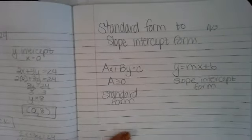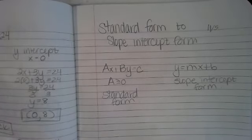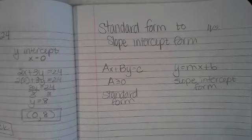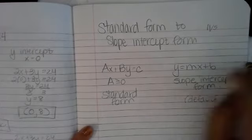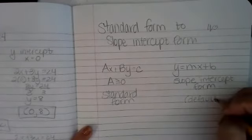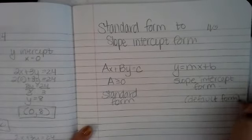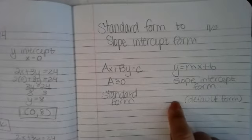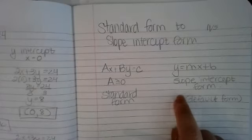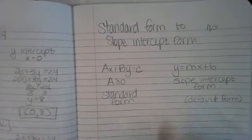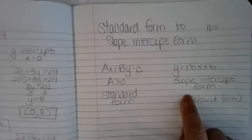An important thing to keep in mind: unless it is specified somewhere in the directions, we are always going to use slope intercept form as our default. If it asks you to write the equation of a line, you're always going to write it in slope intercept form unless specified otherwise.